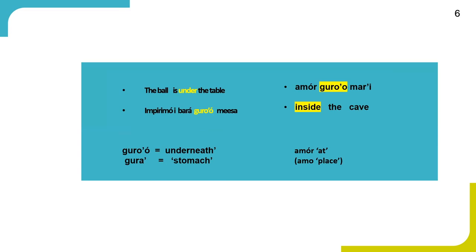Now, in Gorwa some location nouns are highly selective and they must follow another specific location noun. The example here means 'the ball is under the table.' Gawai here is a location noun meaning 'under' or 'underneath,' and it is derived from a common noun meaning 'stomach.' But Bara is a highly selective location noun — it follows another specific noun. When it occurs after Bara, it means 'underneath.'